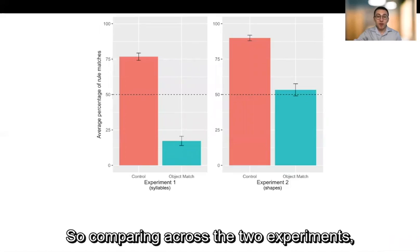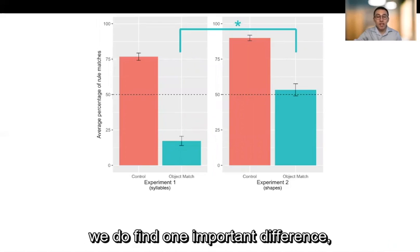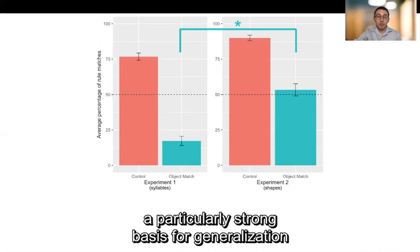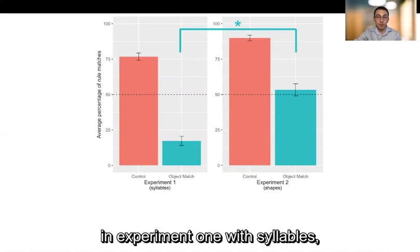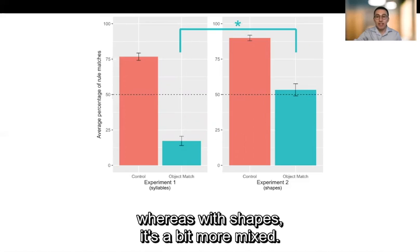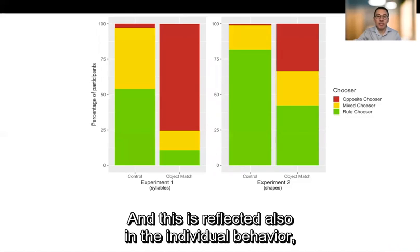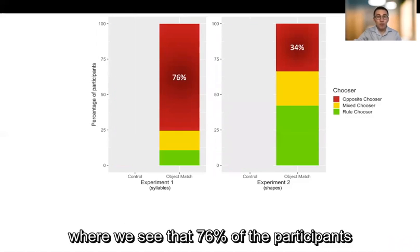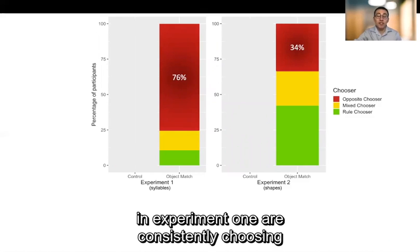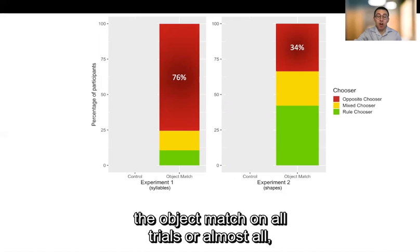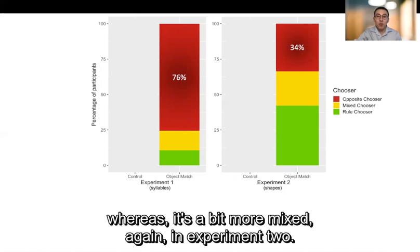So comparing across the two experiments, we do find one important difference, which is that the object match is a particularly strong basis for generalization in experiment one with syllables, whereas with shapes it's a bit more mixed. And this is reflected also in the individual behavior, where we see that 76% of the participants in experiment one are consistently choosing that object match on all trials or almost all, whereas it's a bit more mixed again in experiment two.